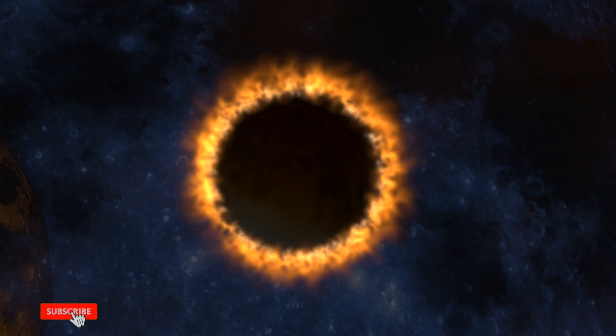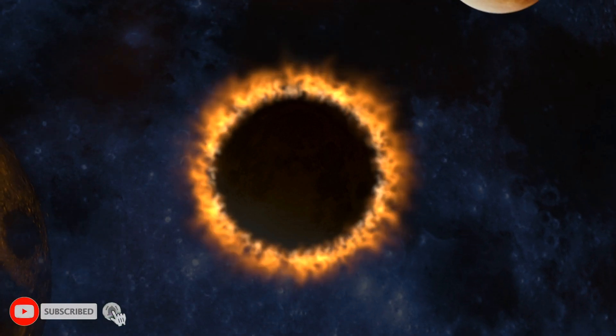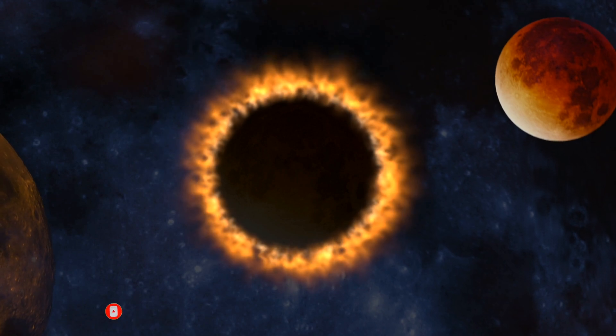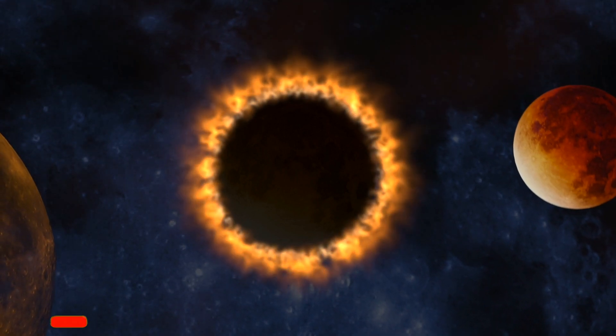However, if rings are temporary, perhaps we just missed out on seeing giant ring systems of Jupiter, Uranus, and Neptune, which have only thin ringlets today.